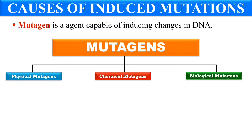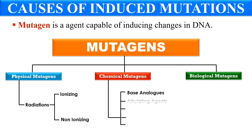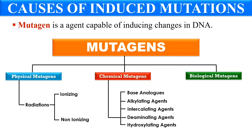These are the broad categories of mutagens. In physical mutagens we study about radiations, which are ionizing and non-ionizing, while chemical mutagens include base-analog agents, alkylating agents, intercalating agents, and deaminating and hydroxylating agents. Similarly, biological mutagens include viruses and transposable elements or transposons. Now let's discuss all these mutagens in detail.